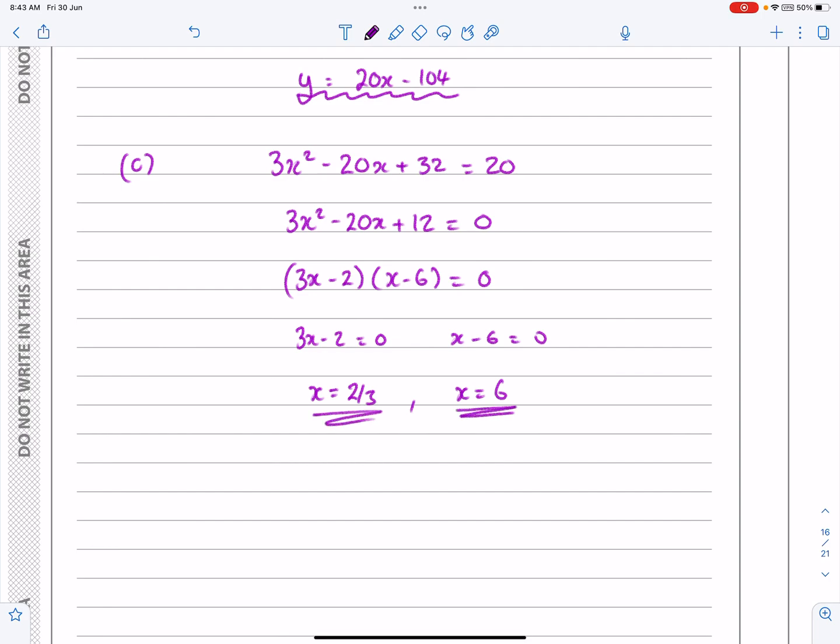Which we already knew. So actually, I'm underlining those ones. It's only this one I wanted. And because we knew x equals 6, if you were struggling to factorize, you should have known that (x - 6) is a possibility of one of the two things in the brackets.